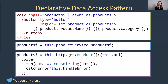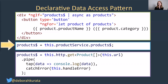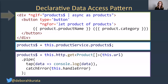So here's our first declarative pattern — our declarative data access pattern. Starting at the bottom, we have our products$ in our service. In the middle, we have our products$ in our component. And then in our template, we're using our async pipe.